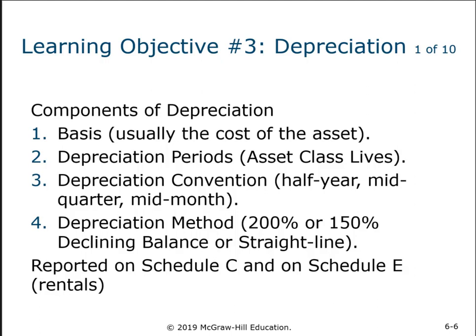In regular accounting, you can come up with whatever time period is most likely to represent useful life. In the tax law, to simplify things, we basically put things into asset classes — everything in this asset class lasts five years, everything in this asset class lasts seven years. That makes it easier to calculate, but it's something you have to remember.